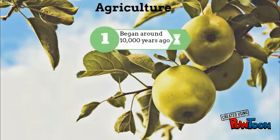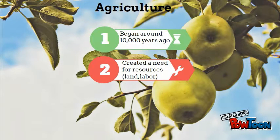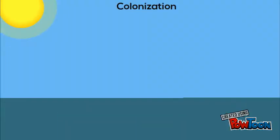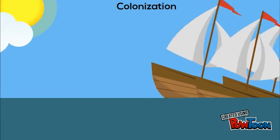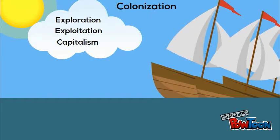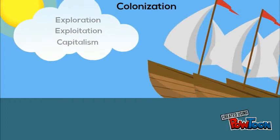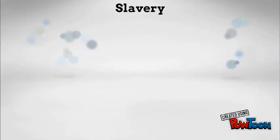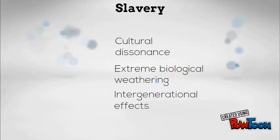The rise of agriculture in the first epidemiological transition led to the need for land ownership for farming. This greater need for resources pushed Europeans to start exploring the rest of the world, while at the same time exploiting local populations. Slavery is just one example of this exploitation, and has often been justified by race.